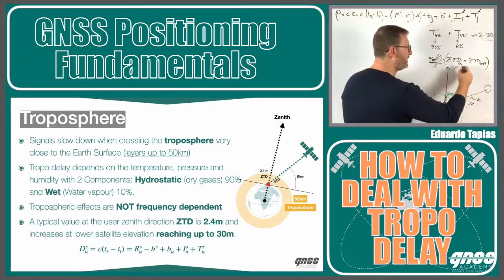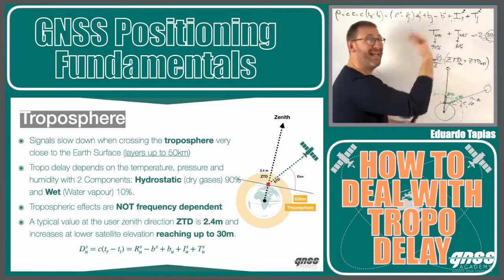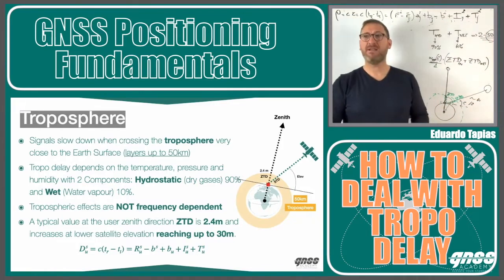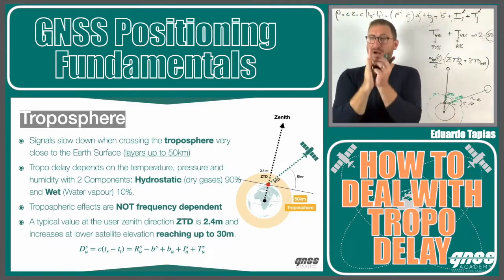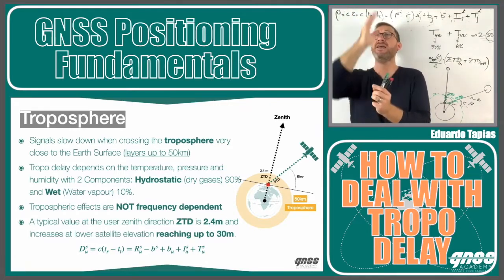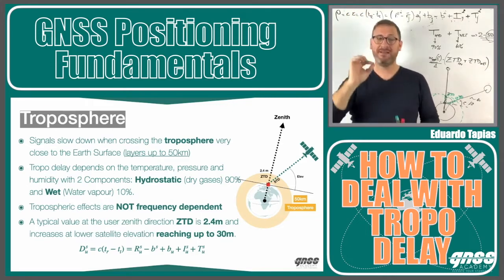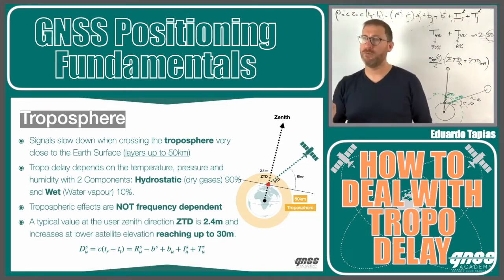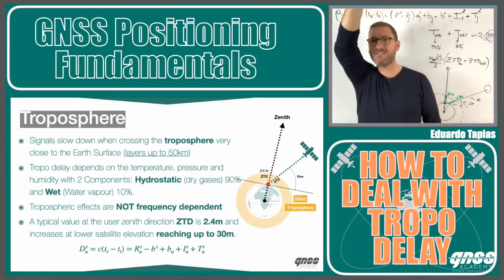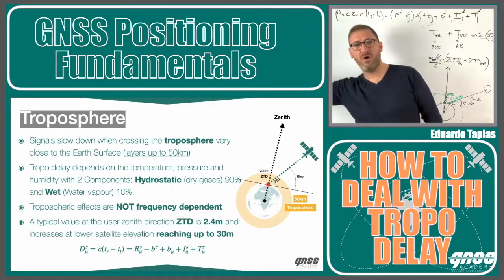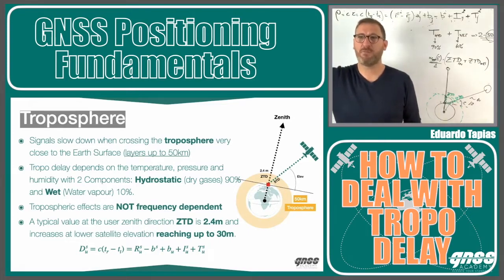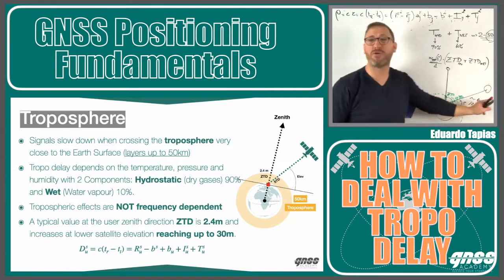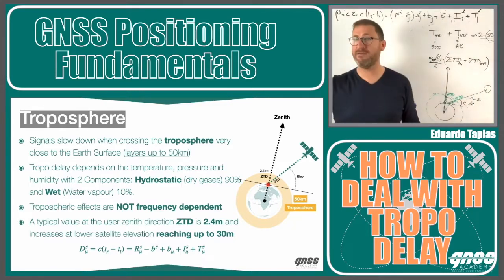We can reach up to 30 meters of slant delay in the troposphere for low elevation angles. A figure to keep in mind is that in zenith, looking straight up at the sky, the tropospheric delay is 2.4 meters. When the satellite is at lower and lower elevation angles, we can reach up to 30 meters of tropospheric delay because the signal crosses more troposphere.